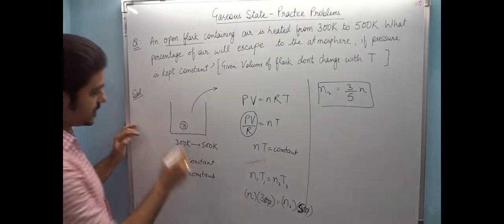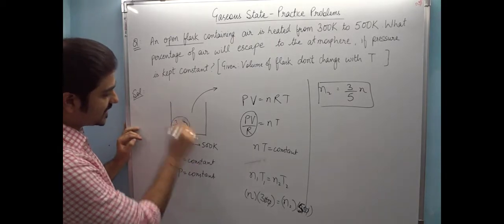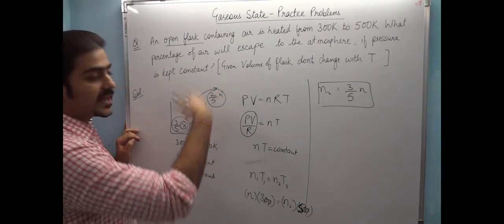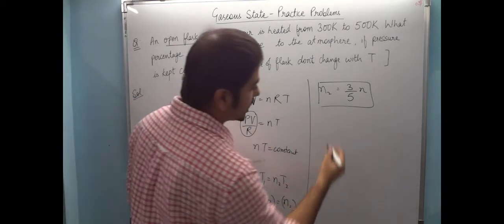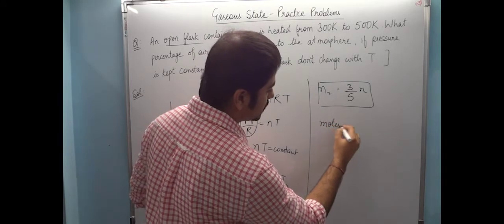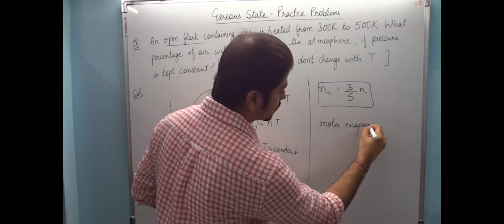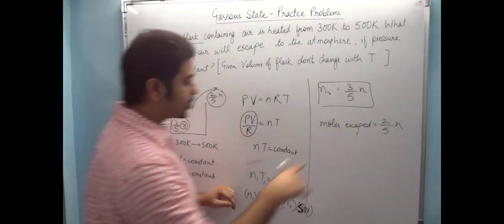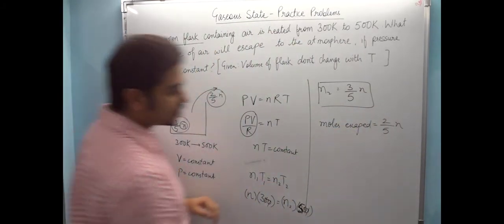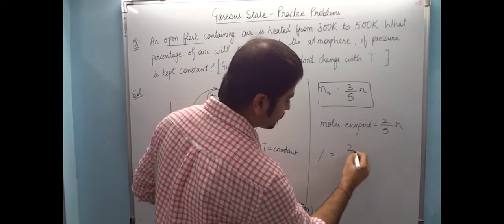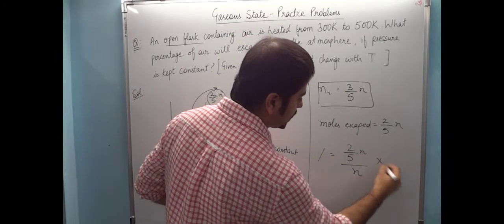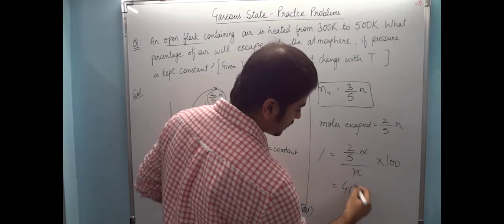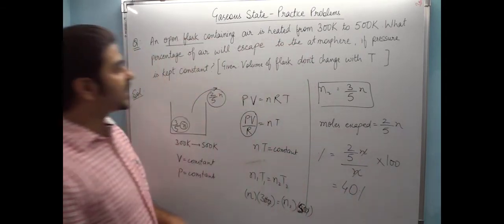3/5n remained, which means 2/5n went out. So moles escaped equals 2/5n. Out of total n moles initially, the percentage of escape is (2/5n)/n × 100, which gives us 40%. So the answer is 40%.